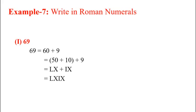Let us solve example 7, write in Roman numerals. First number is 69, it is in Hindu Arabic numeral system, we have to convert it into Roman numerals. So 69 can be written as 60 plus 9, again 60 can be written as 50 plus 10 plus 9. So 50 plus 10 that is LX, L is for 50 and X is for 10, and 9 is IX, so LX plus IX that is equal to LXIX.